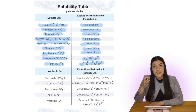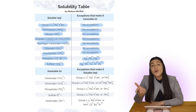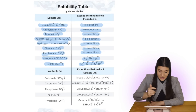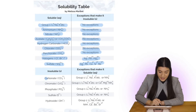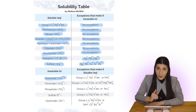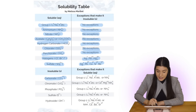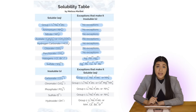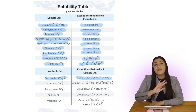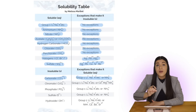Next we're going to move on to the bottom portion of our solubility table. All of these are normally insoluble with a few exceptions. Let's look at carbonate — that's typically a solid, but if we have anything in Group 1 or ammonium attached to carbonate, that would mean it's soluble or aqueous. If we don't have any of those exceptions, then carbonate is typically a solid.